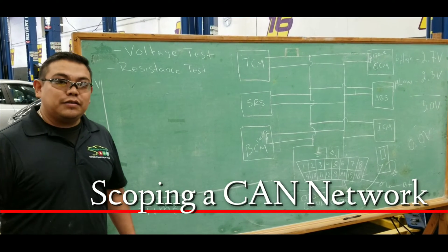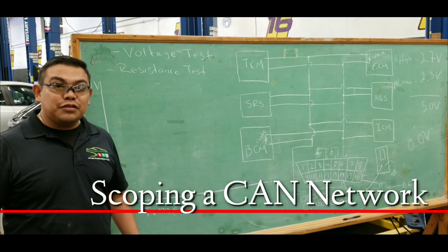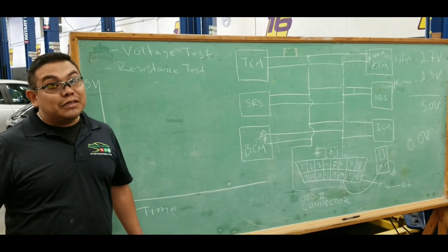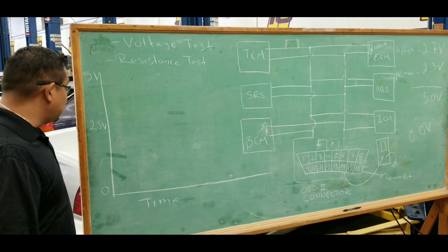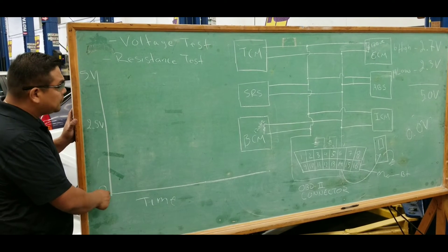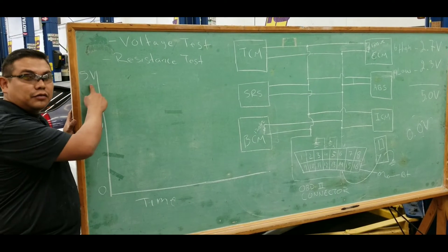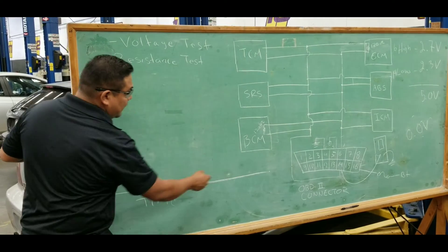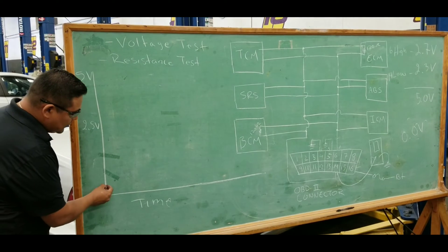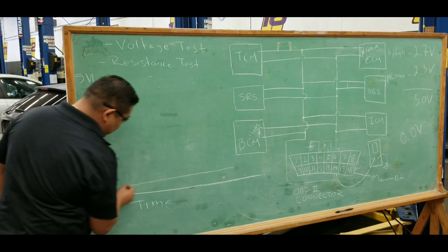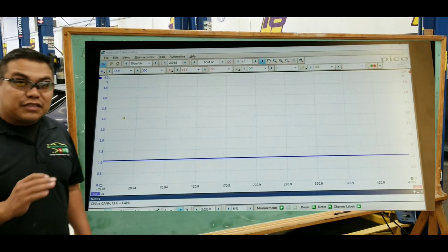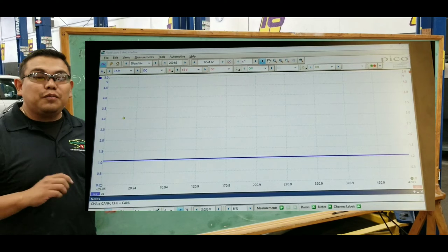One of the best ways to test the CAN network is using an oscilloscope. You can use a multimeter, but the multimeter is limited. The best way is to look at an oscilloscope. Here we have a scale — this vertical line shows zero to five volts; horizontal is time. When the network is asleep, you're going to see two lines across, indicating the network is asleep. When you turn off the ignition, the computers go to sleep.